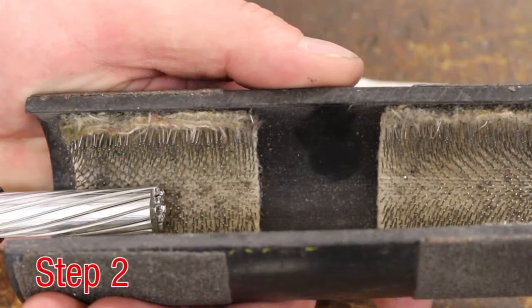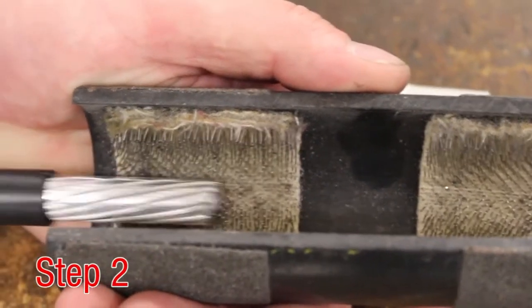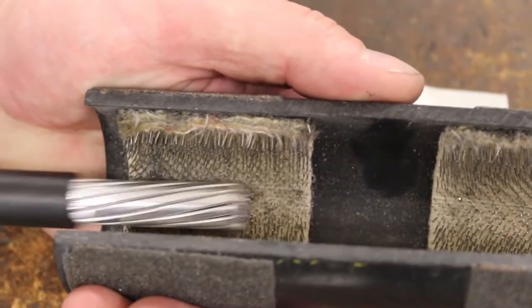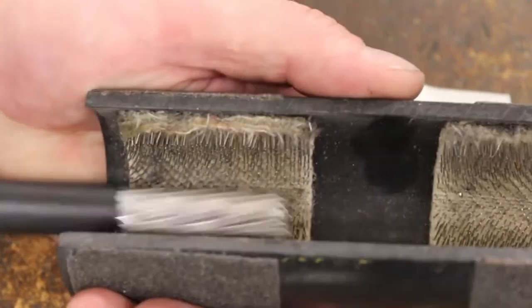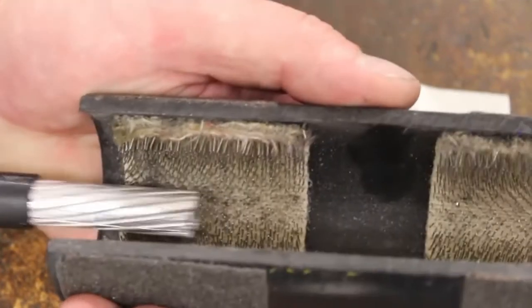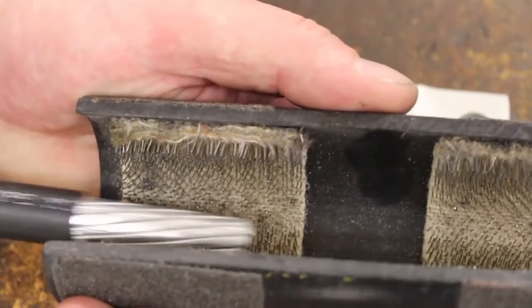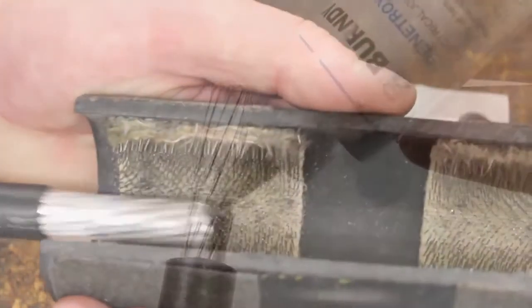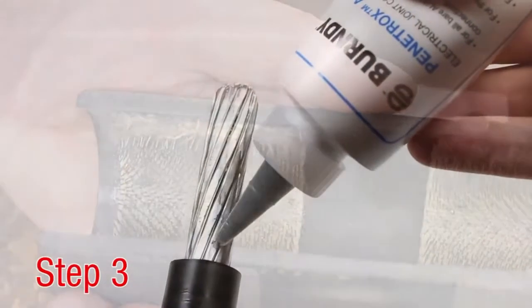Step 2. Scratch brush conductor thoroughly. Aluminum oxidizes very quickly and forms a hard, non-visual, non-conductive coating that develops on the surface. It is very important to always wire brush the stripped portion of the wire before making the connections. Step 3.